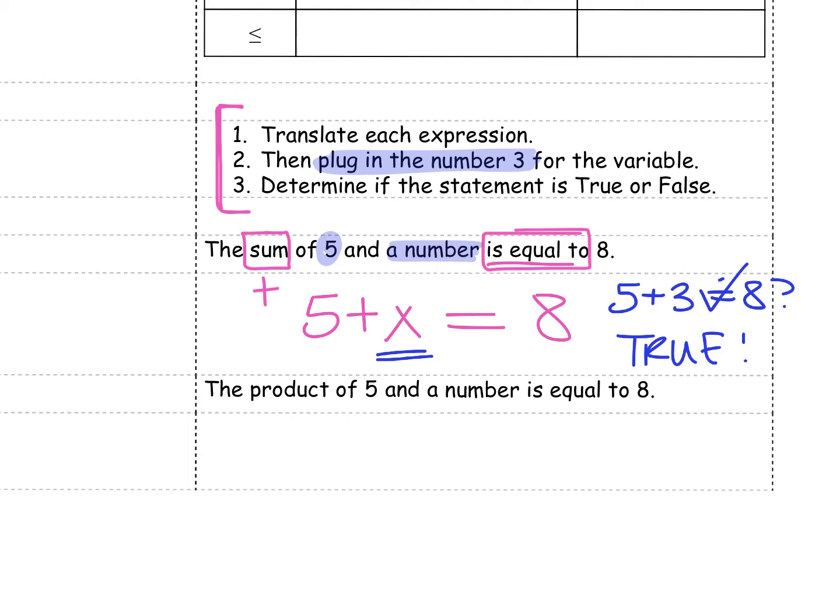Our next problem says the product of 5 and a number is equal to 8. Product means multiplying. And I'm going to multiply 5 and a number that I don't know, so that variable. So 5 times a variable, I'm going to use a this time, is equal to 8.